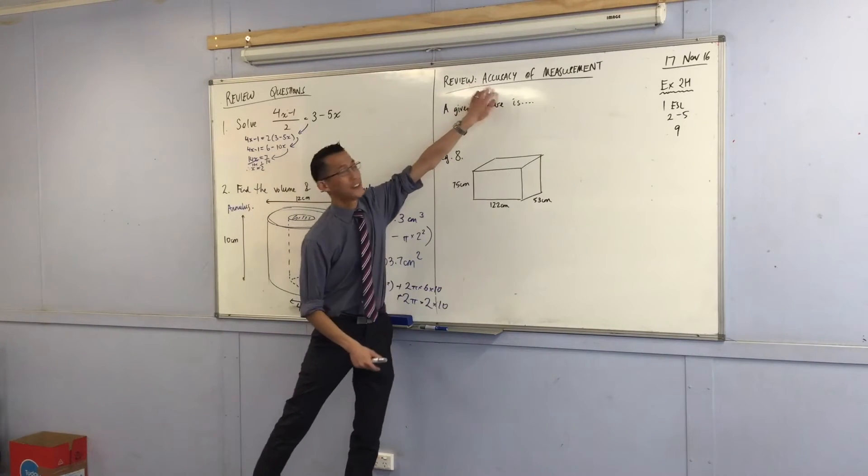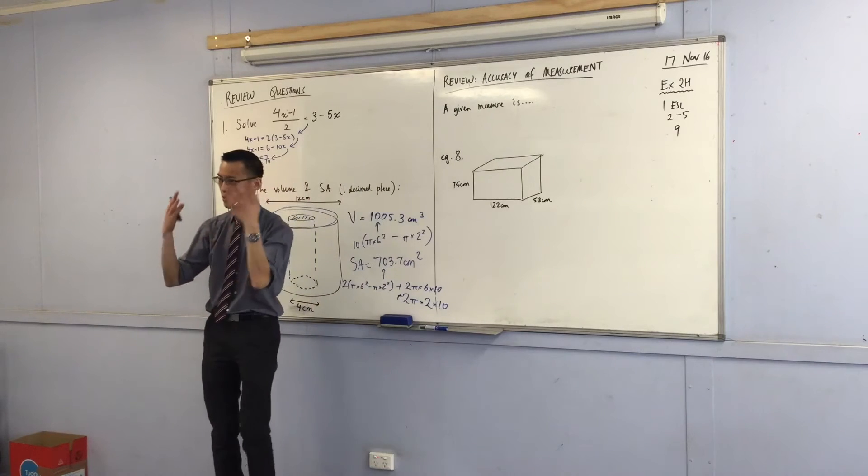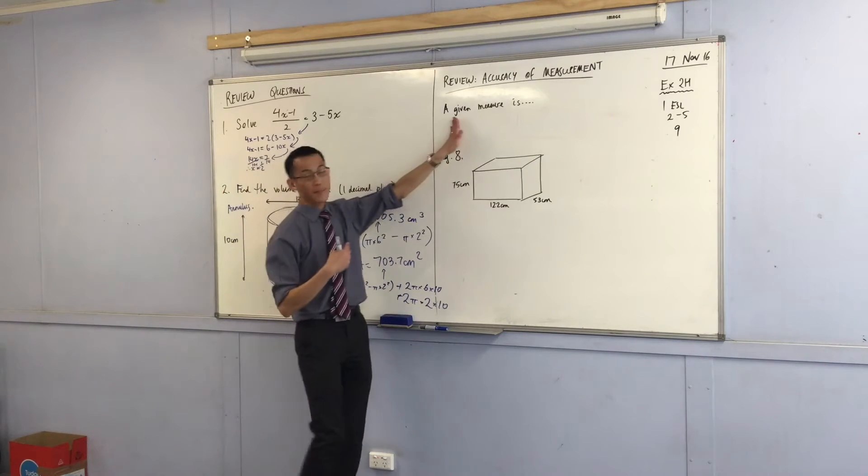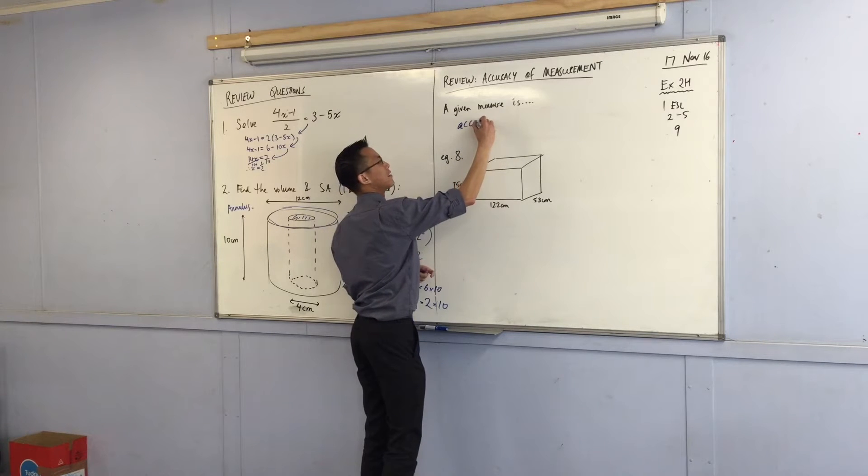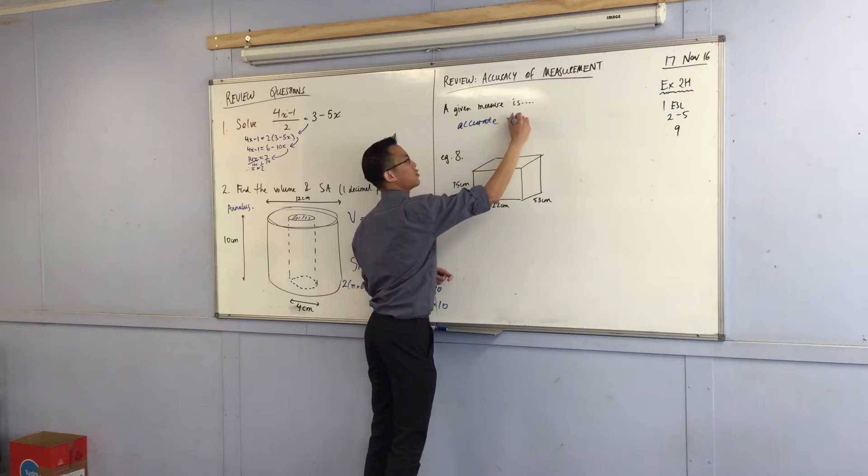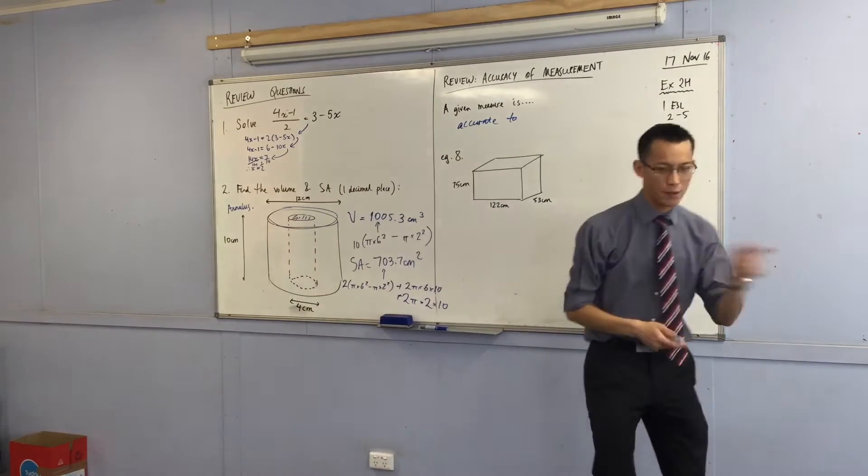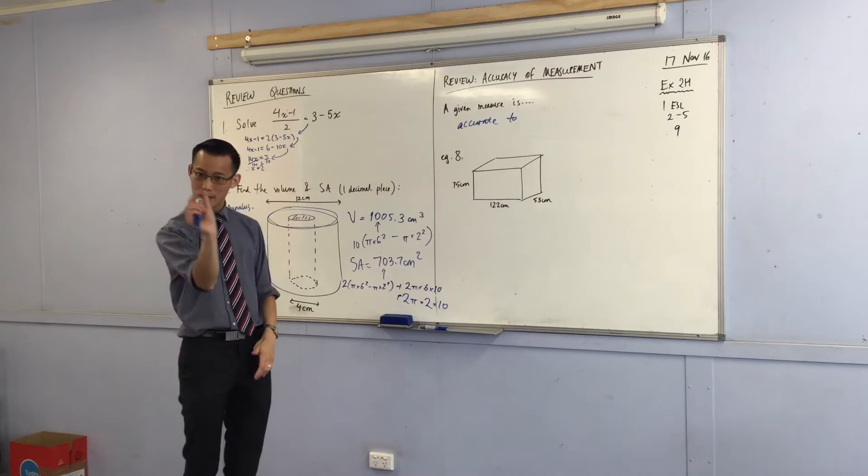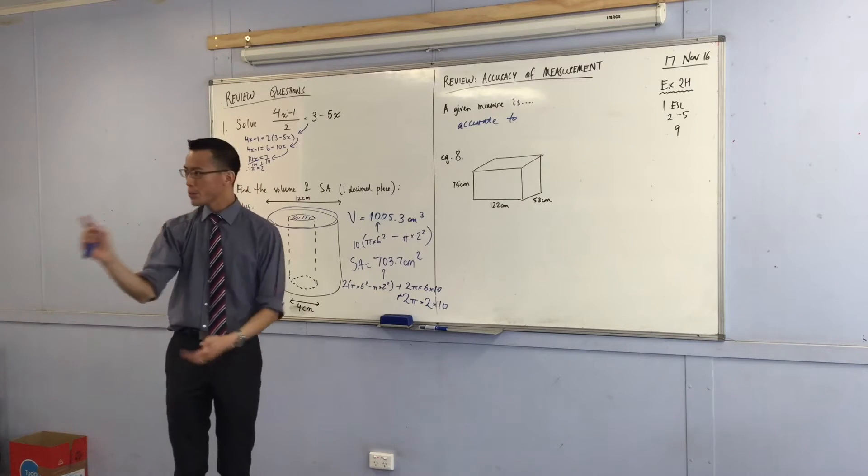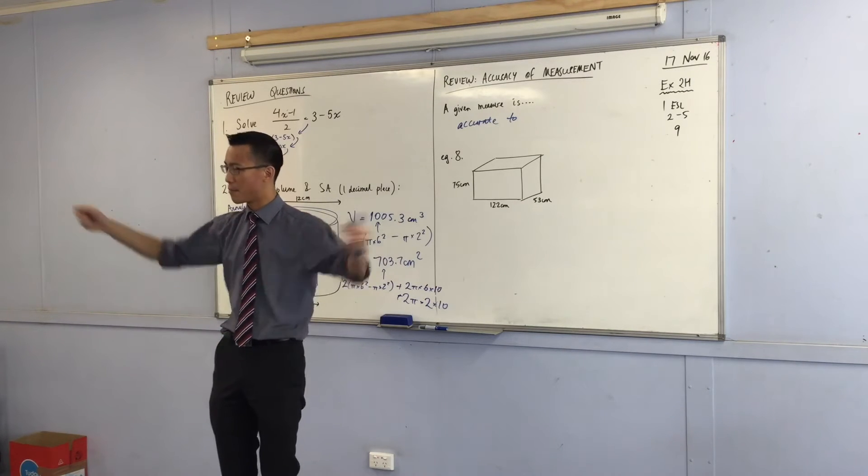When you're talking about this idea of accuracy, the phrase I want you to remember is that a given measure is accurate to... Now if I have, for example, a meter rule with one centimeter blocks, what would you say is the accuracy of that meter rule?